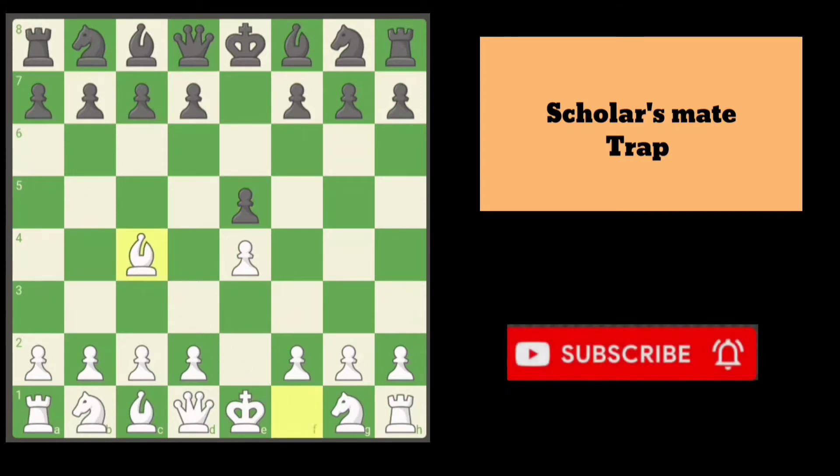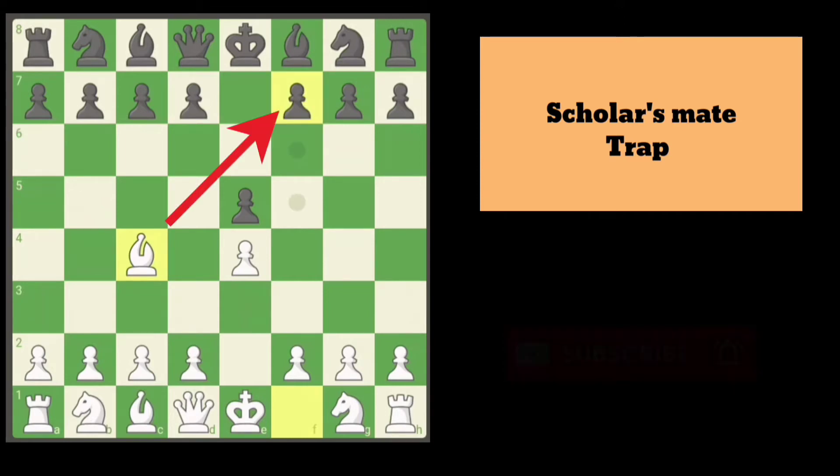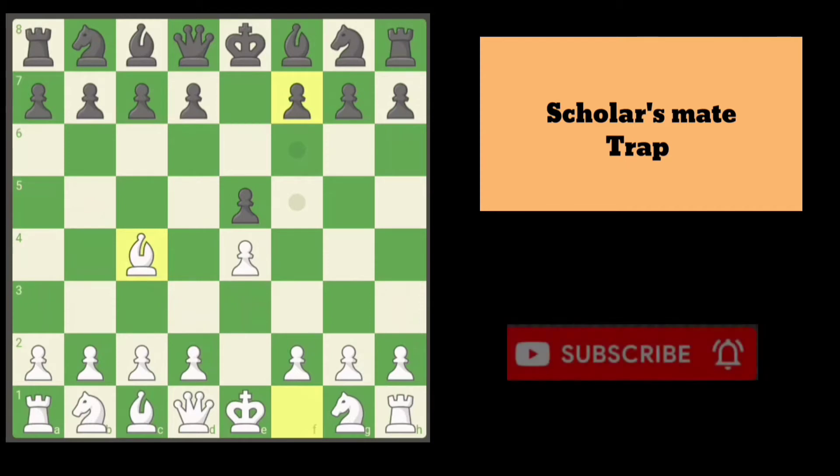White plays bishop c4, directly attacking the f7 pawn. The f7 pawn is the weakest pawn because it is defended only by the king.